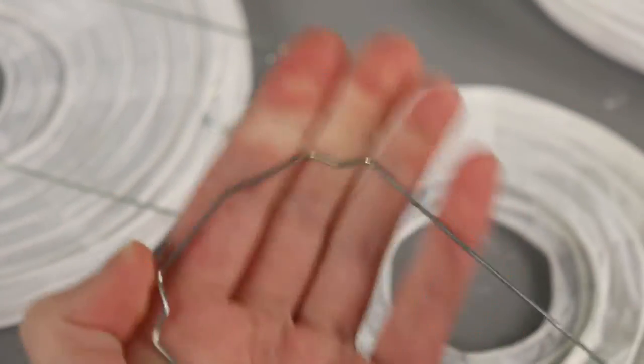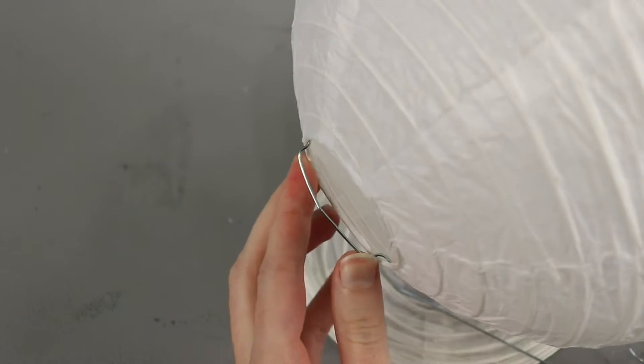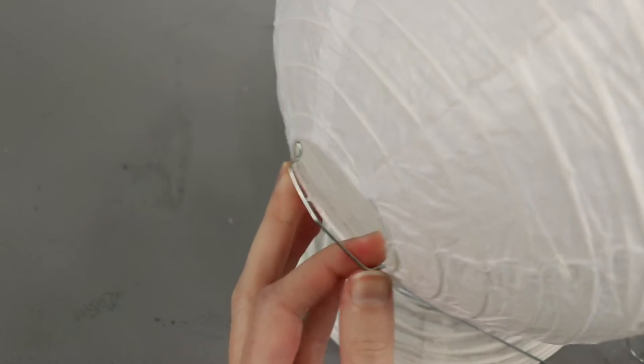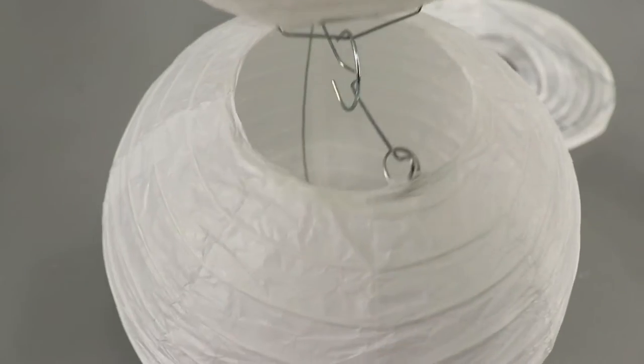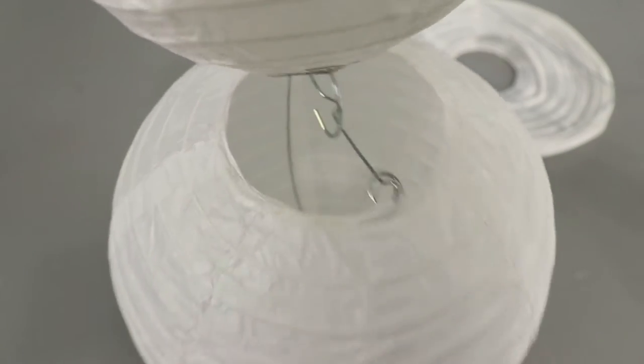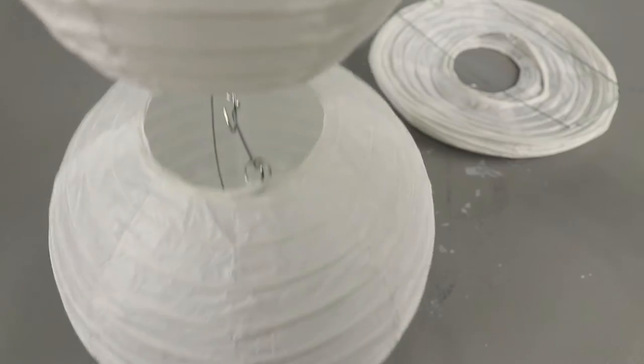With pliers I grabbed the bottom section just off to the side of the center and gave a little twist. Don't bend it too much or else it will get too narrow for the lantern and not hold it open. A small bend will be enough to keep the lanterns from sliding.